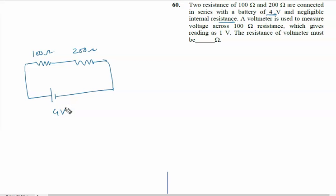A voltmeter is used to measure the voltage across 100 ohm resistance. It means here we are putting some resistance that is Rv. Then there is a voltmeter putting like this - that is a simple concept I will discuss in my theory class also.